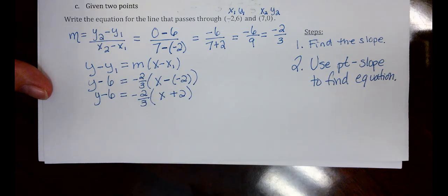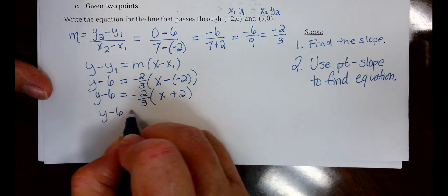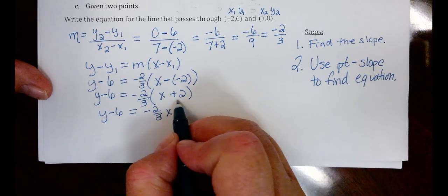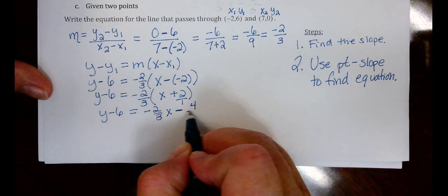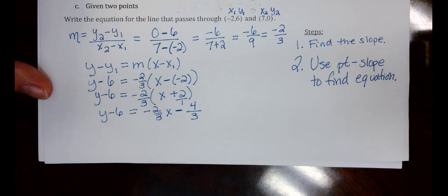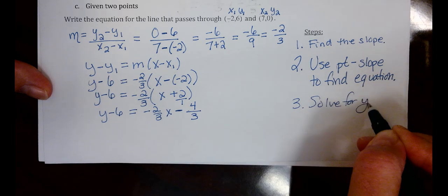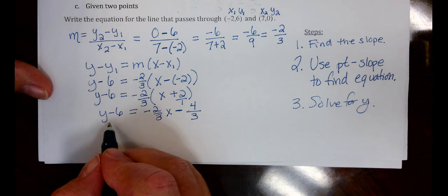Our next step here is to distribute. So we have Y minus 6 equals negative 2 thirds X minus, again, you can put this over 1 and multiply across, 2 times 2 is 4 over 3 times 1 is 3. And remember, we're trying to solve for Y. We're trying to eventually get this in slope intercept form, Y equals MX plus B format. So our last step is to get Y by itself by adding 6.